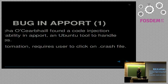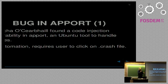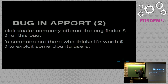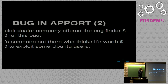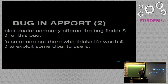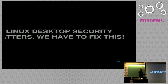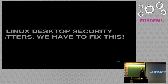A code injection vulnerability was found in Apport — Ubuntu's crash-handling tool. It produces crash files and when you double-click one it gives you info. The researcher asked an exploit-selling company what they'd pay, and they offered $10,000 for this bug — meaning someone thinks it's worth that much to attack Ubuntu users. Many people think Linux desktop doesn't matter because not many people use it, but this shows it does matter. Linux desktop security matters and we have to fix this.